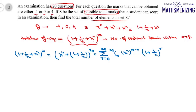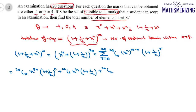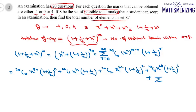Writing out the series: 20C0 · x⁸⁰ · (1 + 1/x)⁰, plus 20C1 · x⁷⁶ · (1 + 1/x)¹, plus 20C2 · x⁷² · (1 + 1/x)², plus 20C3 · x⁶⁸ · (1 + 1/x)³, and then the summation where r varies from 4 to 20 of x^(4(20−r)) · (1 + 1/x)^r.